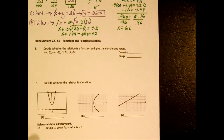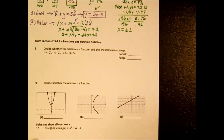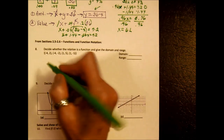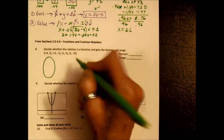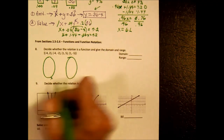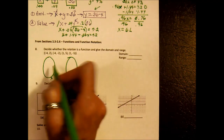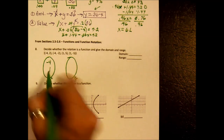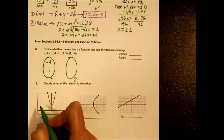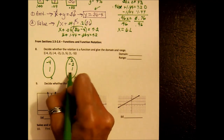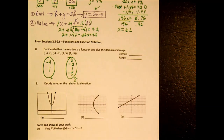Moving on to functions and function notation. Number 8 says decide whether the relation is a function and give the domain and range. I'll map my set by putting the x's and y's. Without repeating, the x's are negative 4 and 1. The y's are 2, negative 2, 1, and negative 5.